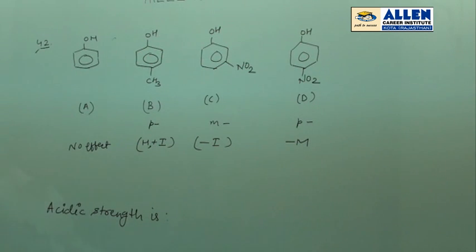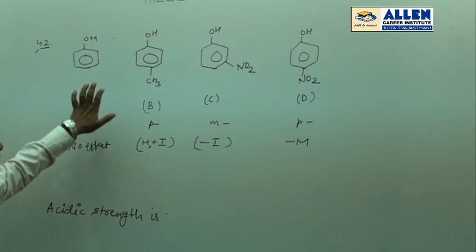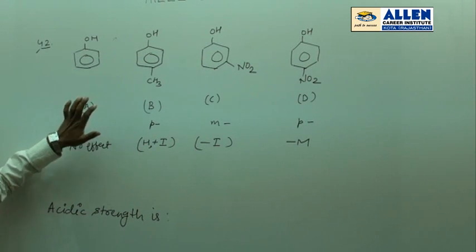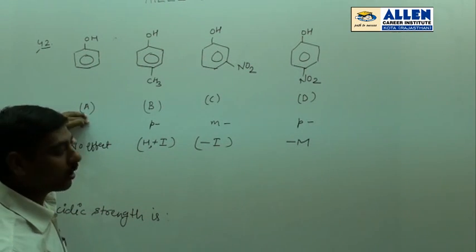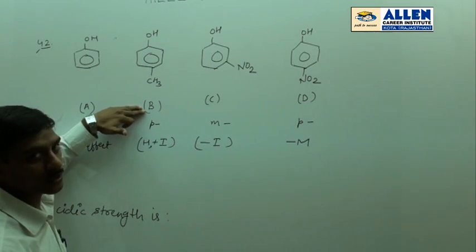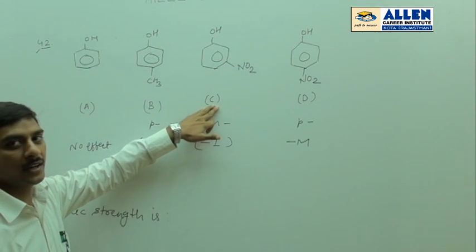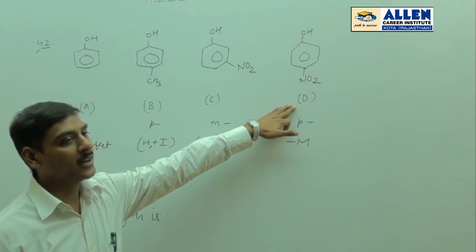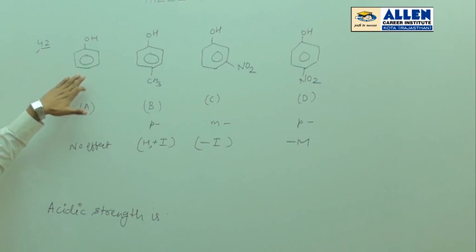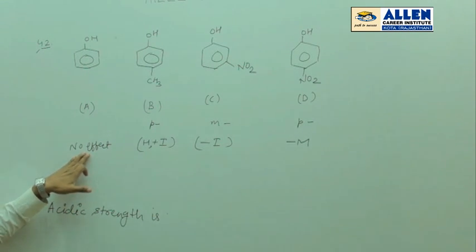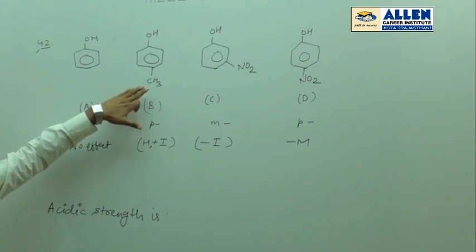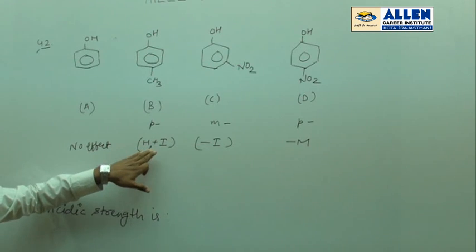Question number 42: What is the acidic strength? Option A is phenol, B is para-cresol, C is meta-nitrophenol, and D is para-nitrophenol. In A there is no effect, but at para position CH3 shows hyperconjugation or +I effect.